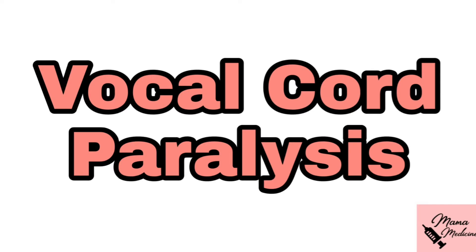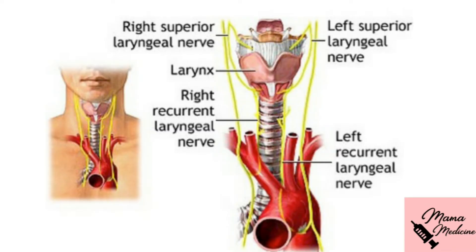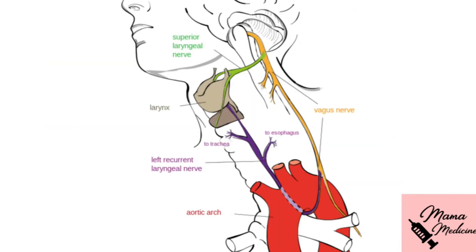In this slide you can see the route taken by the superior laryngeal nerve and the recurrent laryngeal nerve, both right and left side. The left recurrent laryngeal nerve takes a more complicated pathway compared to the right. It arises from the level of the aorta in the mediastinum and loops around the arch of the aorta before ascending into the neck in the tracheoesophageal groove.